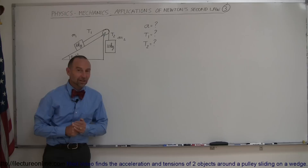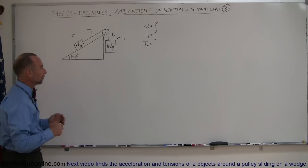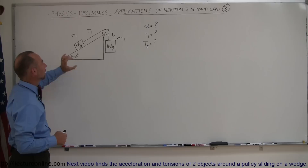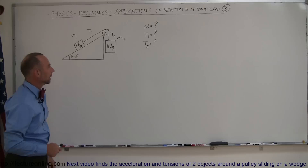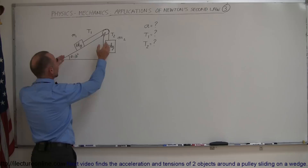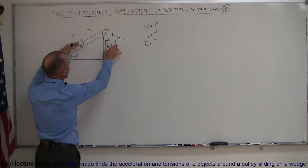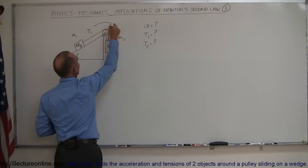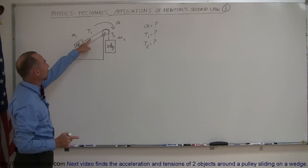Here's our third example of how to use Newton's second law. These problems are going to get more complicated as we go along. We have a wedge-shaped object with a mass on top of the incline and another mass hanging from a string attached to the first mass over a pulley. From intuition, if this is a 10 kilogram mass and this is an 8 kilogram mass, the big mass will probably pull the smaller mass off the incline. The question is: what is that acceleration, and what is the tension in each part of the string?